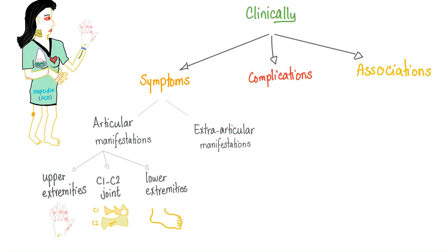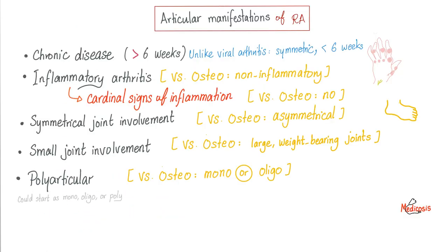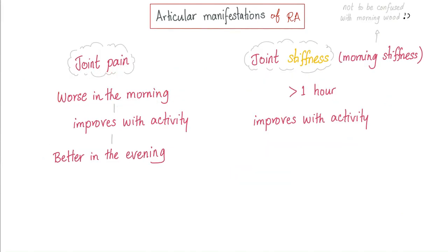Clinically we have rheumatoid symptoms, complications, and association symptoms, which are either articular or extra-articular. The articular manifestations are either upper extremity, lower extremities, or atlanto-axial joint. Articular manifestations require more than six weeks of symptoms. The condition is inflammatory with cardinal signs of inflammation, symmetrical, with small joint involvement, and polyarticular. Joint pain is worse in the morning and improves with activity. Morning stiffness is greater than one hour and also improves with activity.